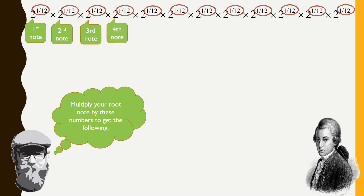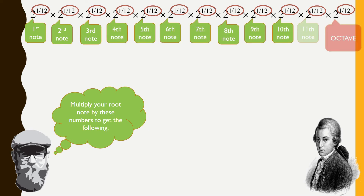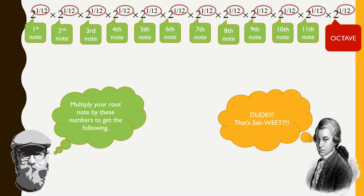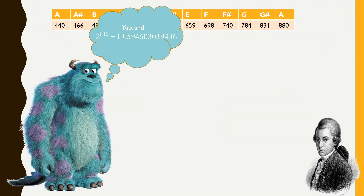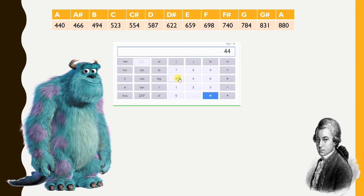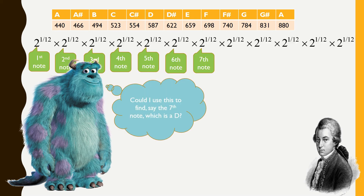Back to the music. Each 2 to the 1/12th times your root note gives you the next note, until you get 12 away — and then that gives you the octave. And 2 to the 1/12th is 1.0594603039436. Sometimes people only believe it if they see it in a calculator. Here we're going to multiply 440 by 2 to the 1/12th power — and if you wanted to find the 7th note, all you'd have to do is multiply by 2 to the 7/12ths to find the frequency of that note.